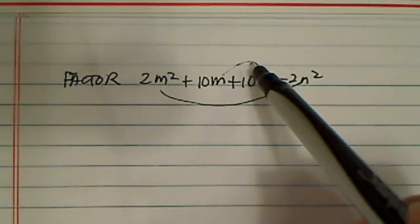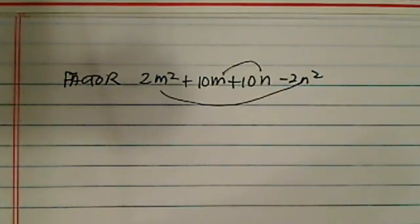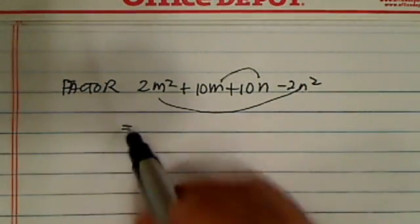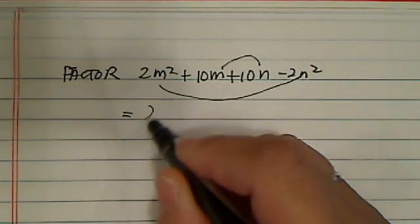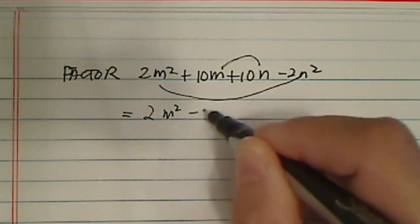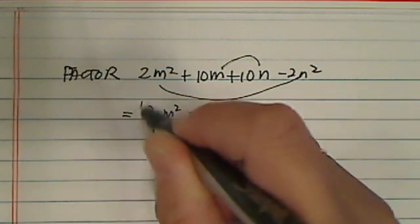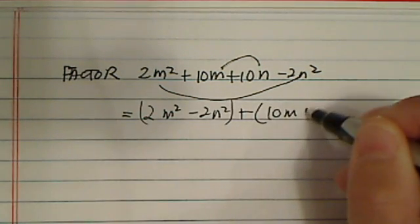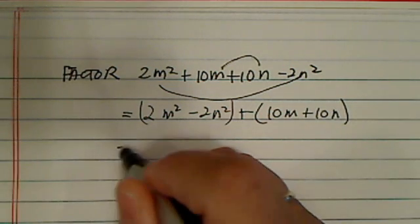Combine those two together. Each one of them has m's and n's. So let's get started on this one. Then you have 2m² - 2n². Let's put them together. 10m + 10n. Put those together.